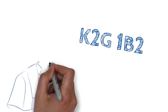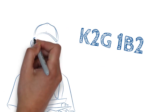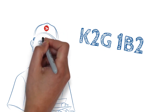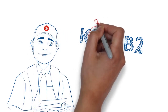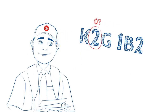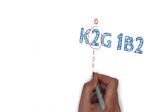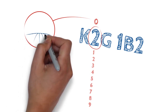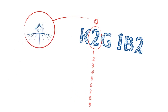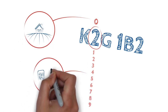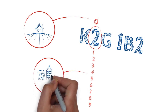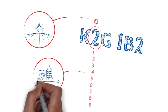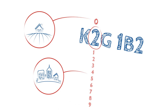Moving on to the second character of the FSA, we can distinguish the community within the major geographic area. When looking at this number, ask yourself: is this number a zero? If the second character is a zero, it's a rural postal code, serviced by rural route drivers or post offices. However, if the second character is a number from one to nine, then it's an urban postal code serviced by a delivery agent.